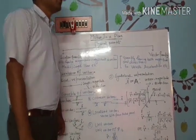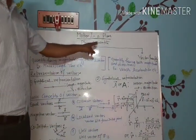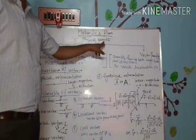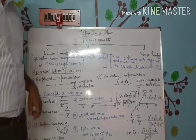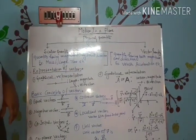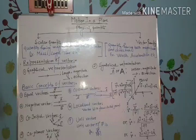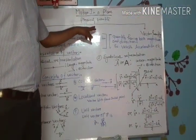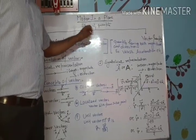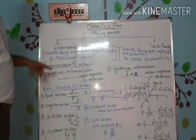That's why we first know about Physical Quantity. Anything in the universe which is measurable is known as Physical Quantity. Physical Quantity is broadly classified into two categories.